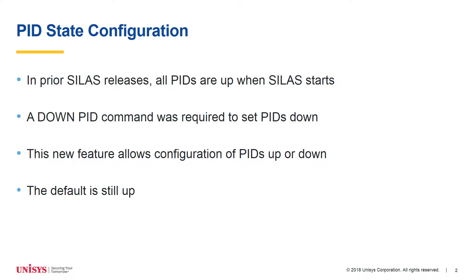There is only one new feature in this release of SYLUS. It's the ability to configure the initial state of a PID. In previous releases of SYLUS, all PIDs started in the up state, and if you wanted the PID to be unusable, you had to use the down PID command to down it. If you want a PID down when SYLUS starts, you now just need to configure it as down. There is no need to down it after SYLUS starts.